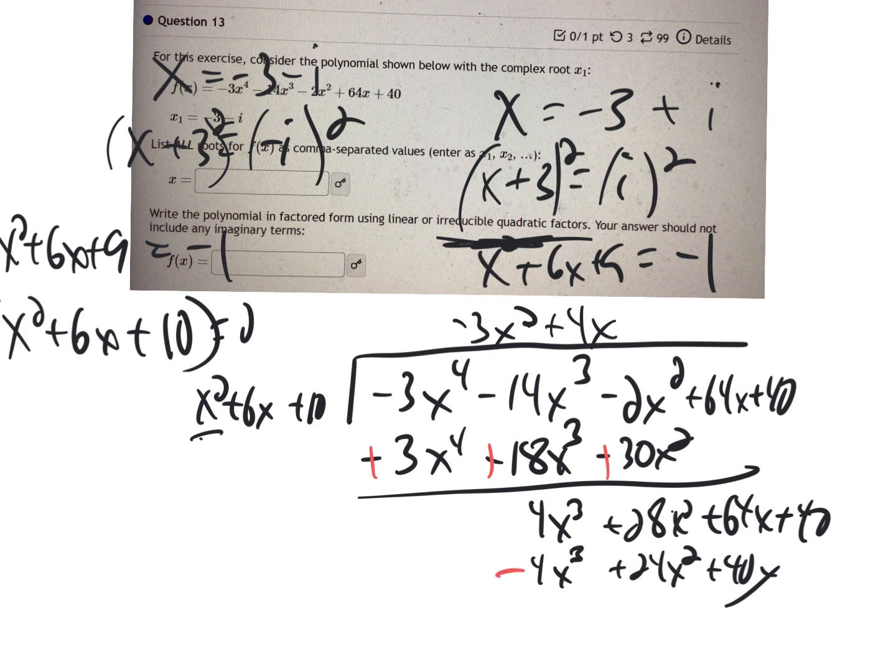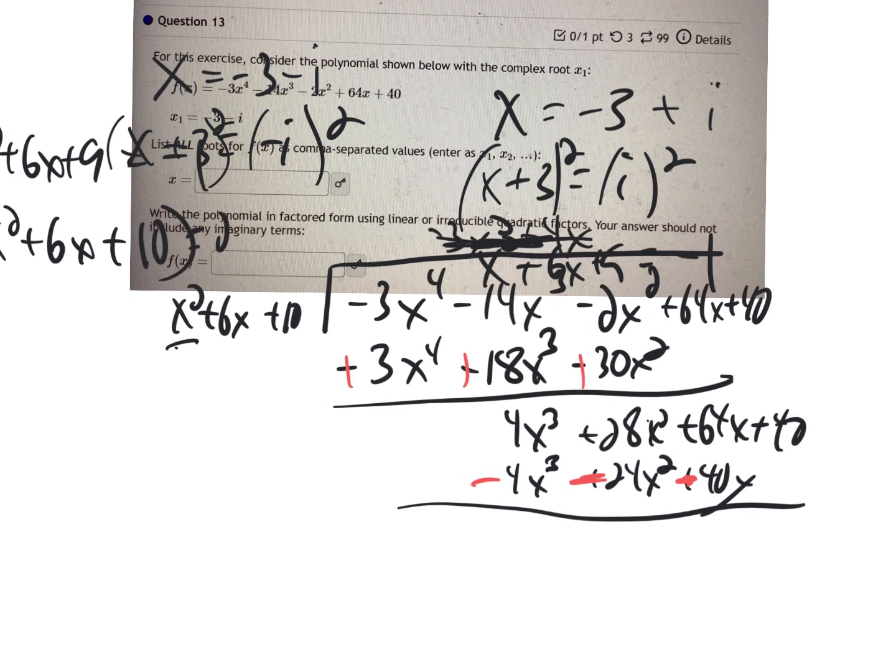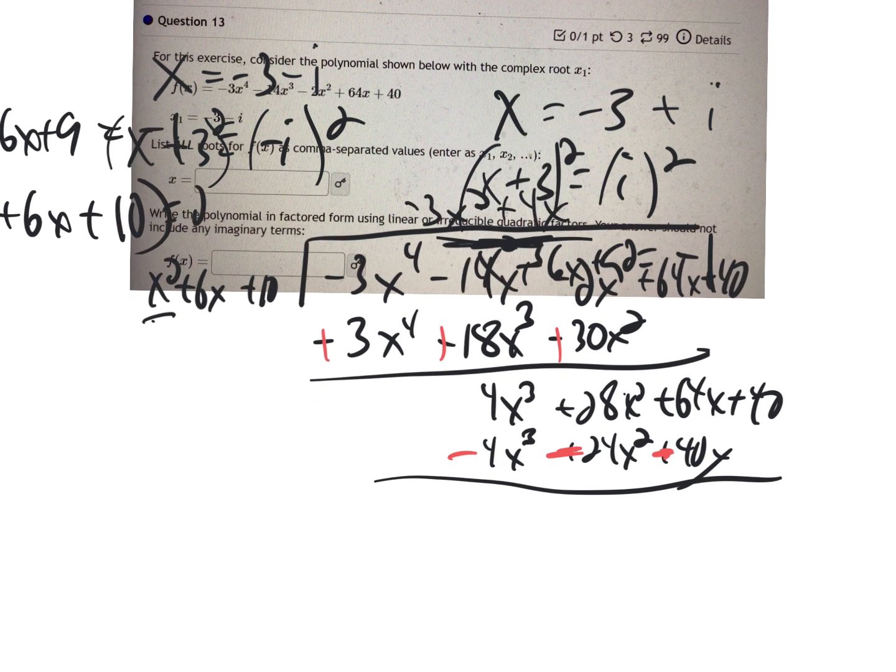And then, of course, I've got to change the signs and subtract them. Let's see if I can move this whole mess up. And then I'm going to do, so that's 0. That gives me 4x squared plus 24x plus 40.